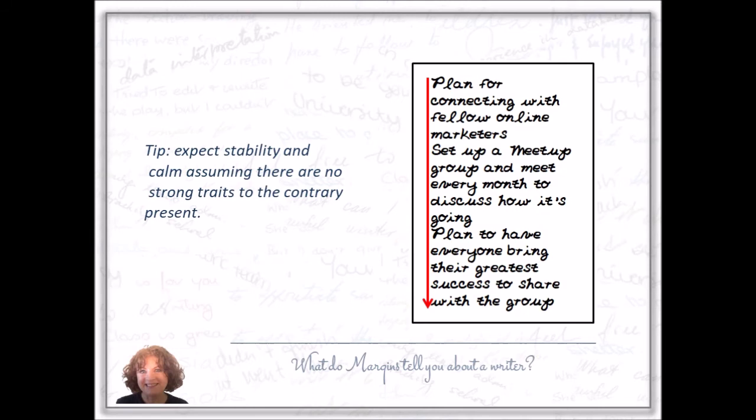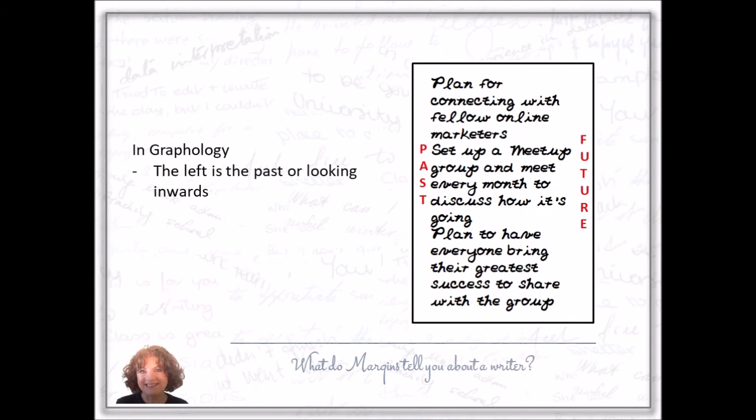In graphology, the left is the past or looking inwards. The right is the future and looking outwards.